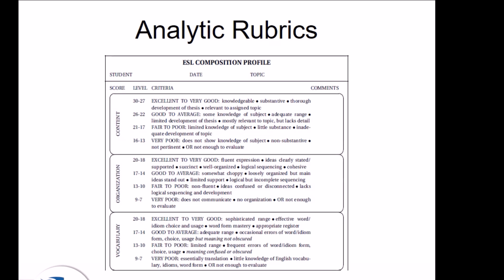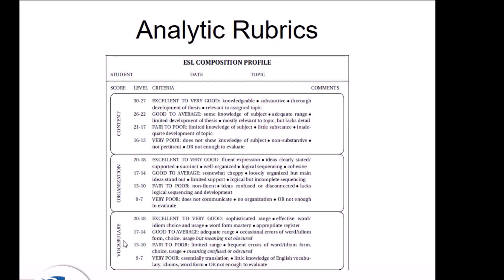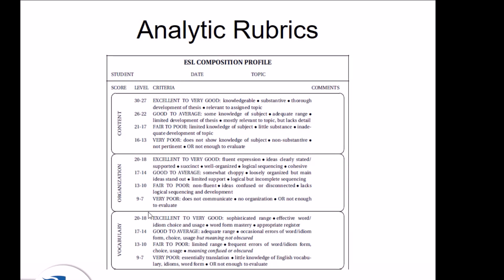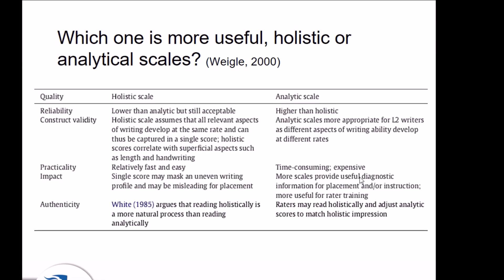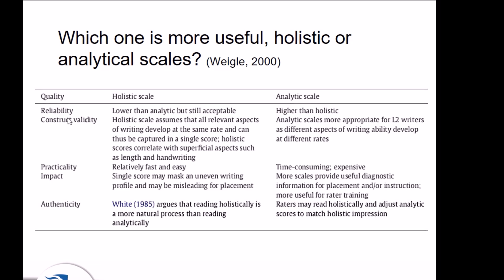However, the analytical rubric does have a solution, because it breaks down the final performance into multiple components including content, organization, vocabulary — and this is not an exhaustive list, just one example of such a format. As you see, the scoring scale ranges from seven all the way up to 30 — though this has been curtailed; I think at the bottom there is more.